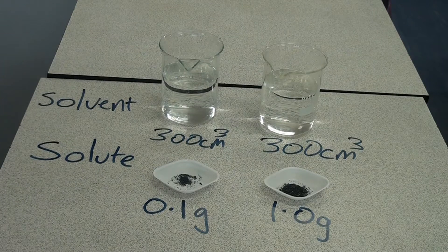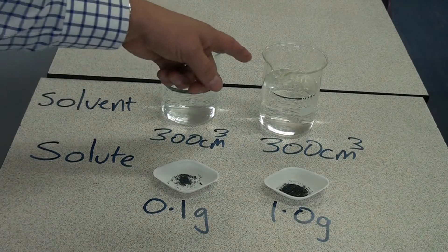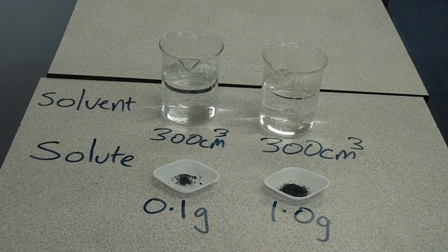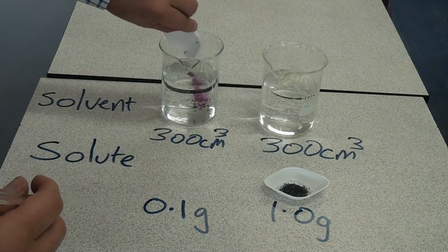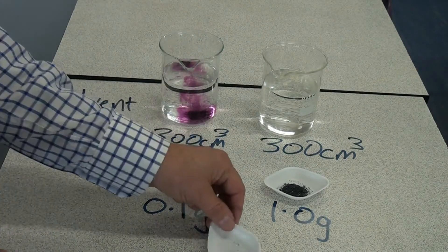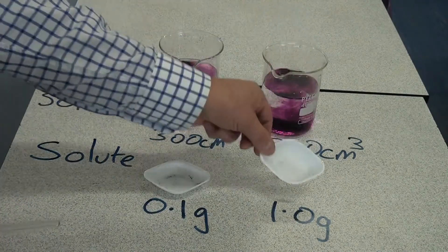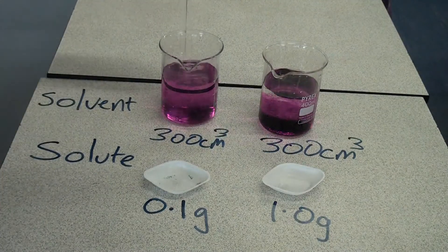In this solution, I've got the same volume of solvent — 300 centimetres cubed of water in each beaker — but I've got a different mass of solute: 0.1 grams of potassium permanganate and 1 gram. When we make up the solutions and give them a stir, we can see the effect that the different mass of solute has on the concentration of the solution.